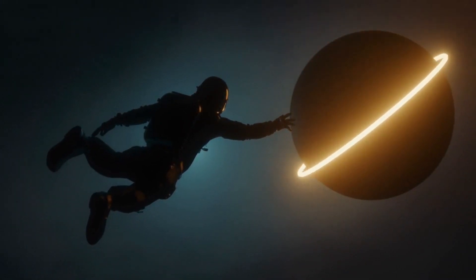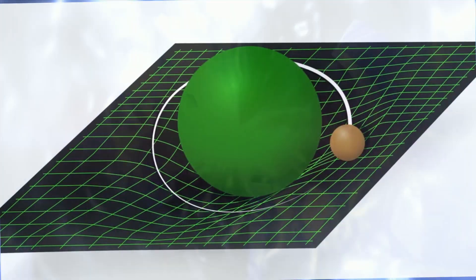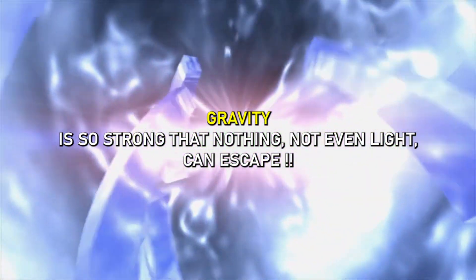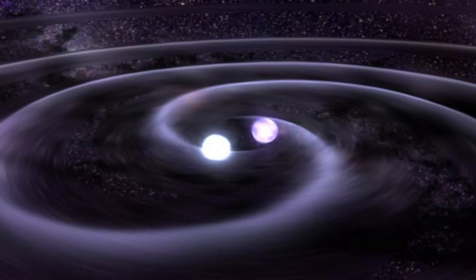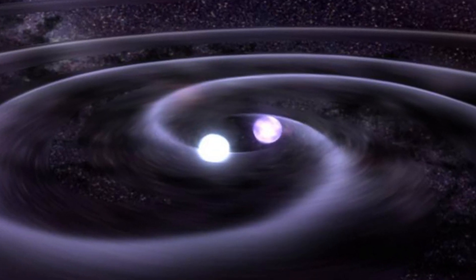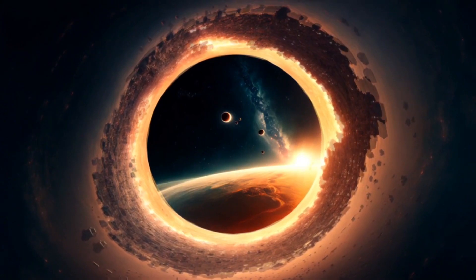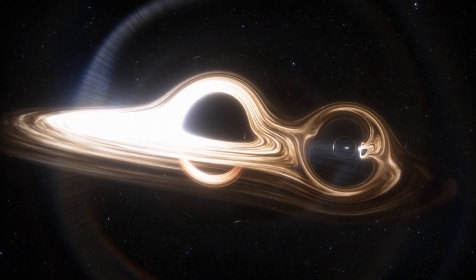So far, the information available to us identifies them as regions of space where gravity is so strong that nothing, not even light, can escape. It's believed that black holes are formed when massive stars collapse into themselves at the end of their lives, leaving only their cores active.